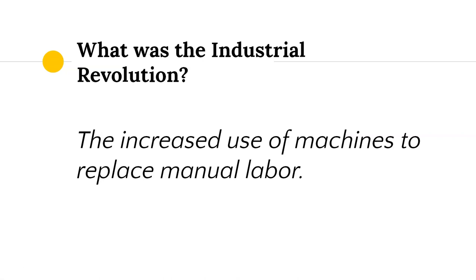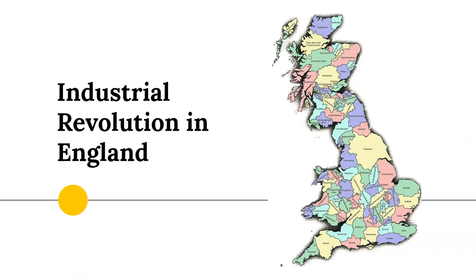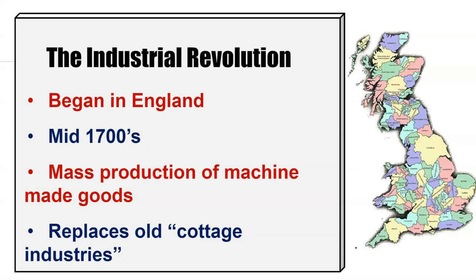What was the Industrial Revolution? It can be defined primarily by the increased use of machines to replace manual labor — basically the development of machines to make people's lives easier, to make things more efficiently and in greater quantities much more quickly. The Industrial Revolution, as you may have gathered from your textbook reading, began primarily in England around the mid-1700s, where we see a mass production of machine-made goods.